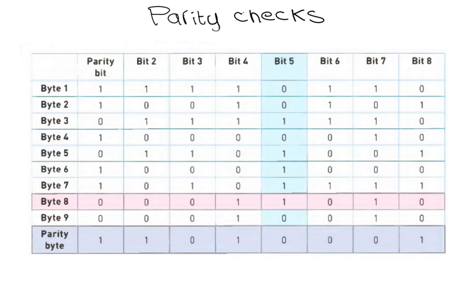Each row and column where the parity has been changed from even to odd should be flagged. After a careful study of this table, it shows that byte 8, row 8, now has incorrect parity — there are three 1 bits. And bit 5, column 5, also now has an incorrect parity — there are five 1 bits.